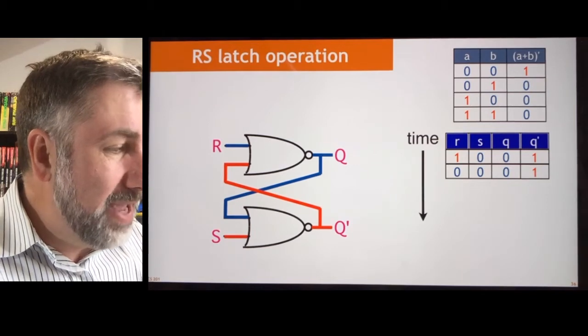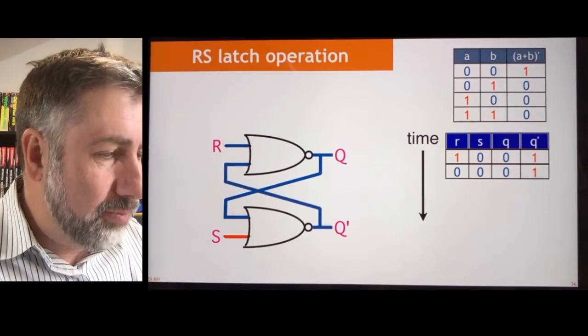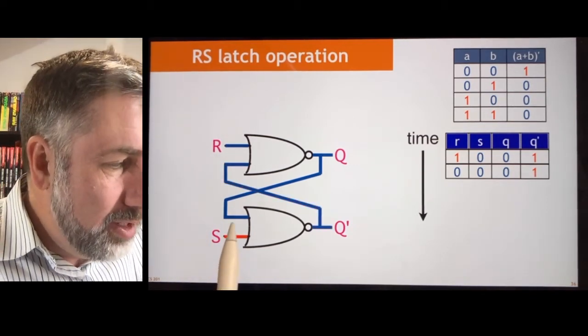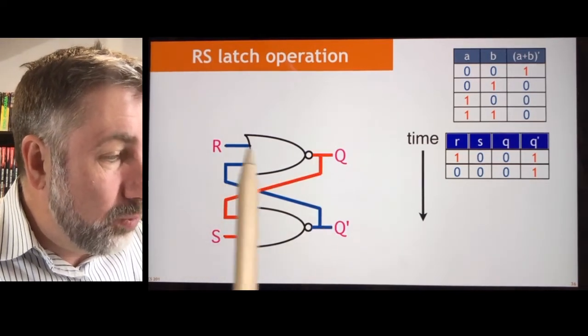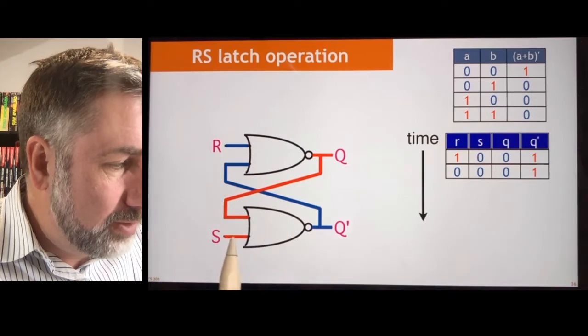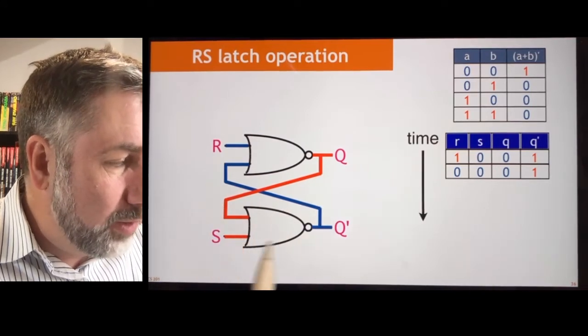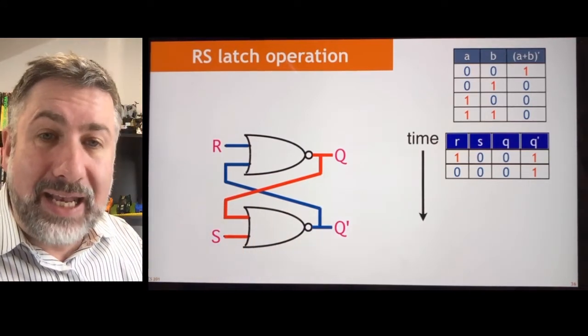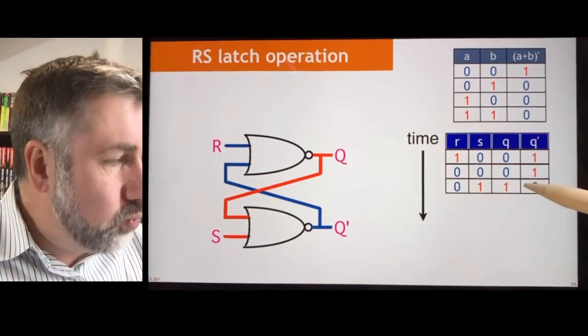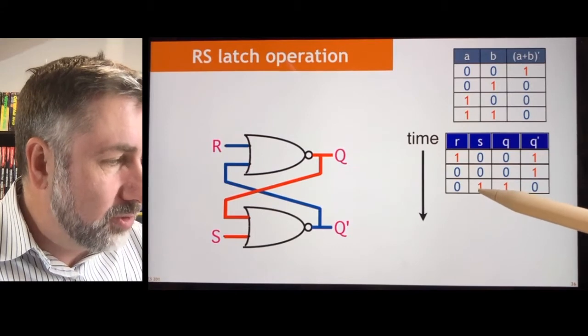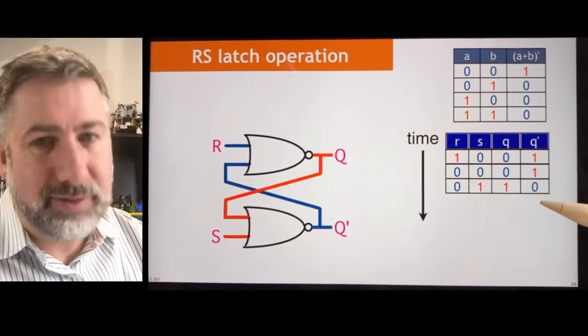What happens if I make S1 and R0? Well, if S is 1, then 1, 0 makes a 0. That forces this to be 1 because this is 0, 0 now, right? And now that 1 means 1, 1 makes it a 0. So again, the value reinforces itself and we store a 1 here. So now Q is 1. If R is 0 and S is 1, Q is 1. And Q prime is 0.